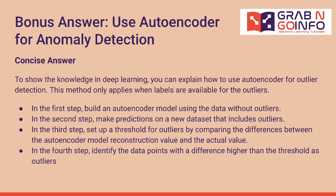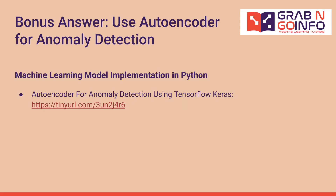The bonus answer is using an autoencoder for anomaly detection, which demonstrates knowledge of deep learning. This method applies when data without outliers is available for training. In step one, build an autoencoder model using data without outliers. In step two, make predictions on a new dataset that includes outliers. In step three, set a threshold by comparing the difference between the autoencoder's reconstruction value and the actual value. In step four, identify data points with a difference higher than the threshold as outliers. A tutorial on autoencoder anomaly detection using TensorFlow Keras is available for reference.